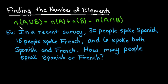The rule that we have here says that the number that are in A or B is equal to the number just in A plus the number just in set B minus the number that are in both A and B.